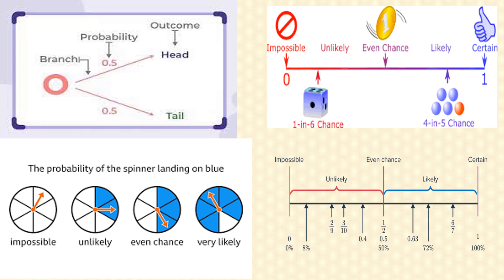Now let us see some diagrams. For tossing a coin, the probability of head is 0.5 and tail is 0.5. On the scale, 0 means impossibility — an event will not happen. Certainty means 1. For example, a hardworking and intelligent student scoring 99% marks is certain. A weaker student may get 60, 20, or 70 marks — he cannot correctly predict — that is unlikely. Certainty depends on individual effort.